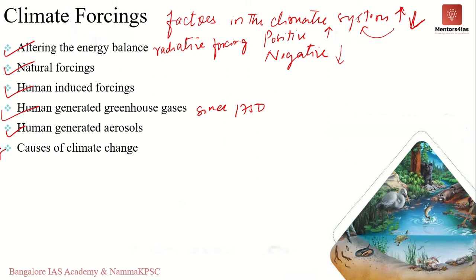While natural forcings do exist, they are not significant enough to explain recent global warming. Human activities are very likely responsible for most of the recent warming. These climate forcings caused by human activities are driving global climate change — what we refer to as global warming. Remember: positive forcing results in warming or increasing the temperature of the earth; negative forcing results in cooling or reduction in temperature. In an exam question, you may be asked to identify whether a given gas results in positive or negative forcing.